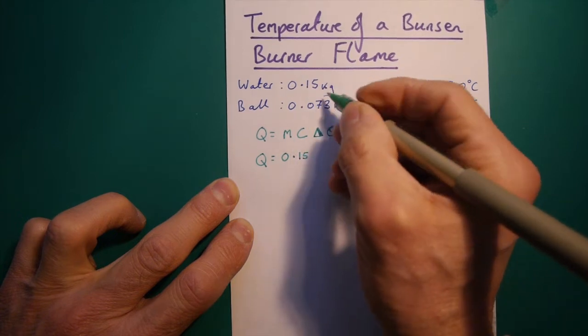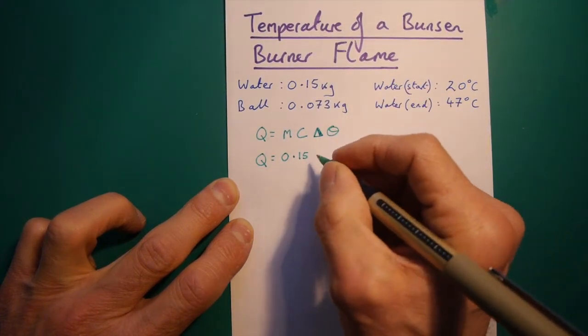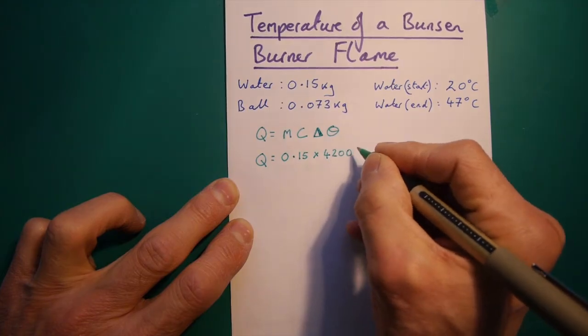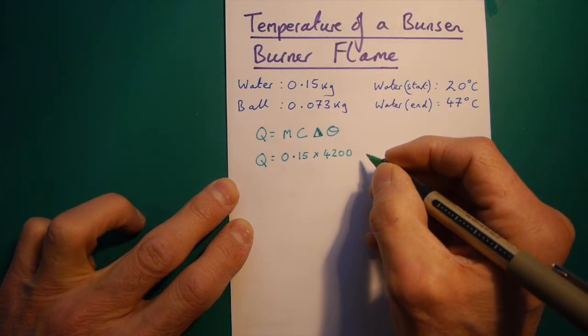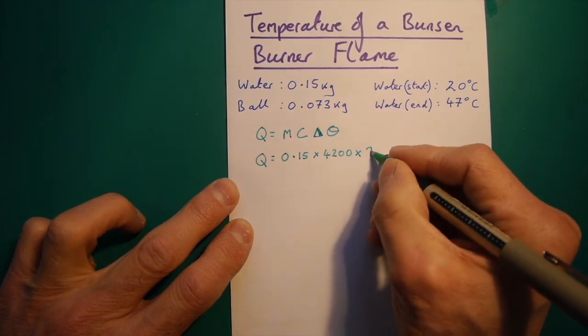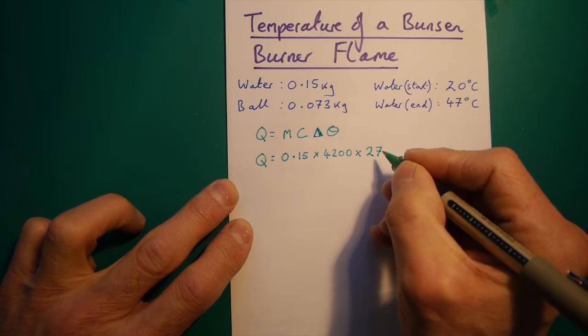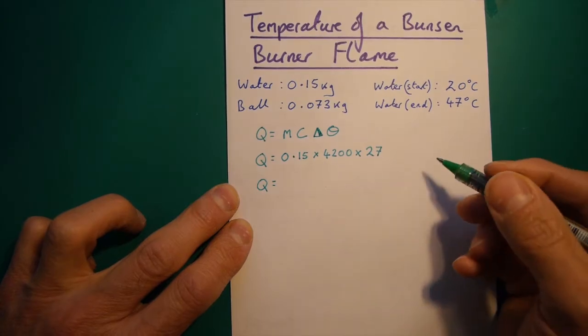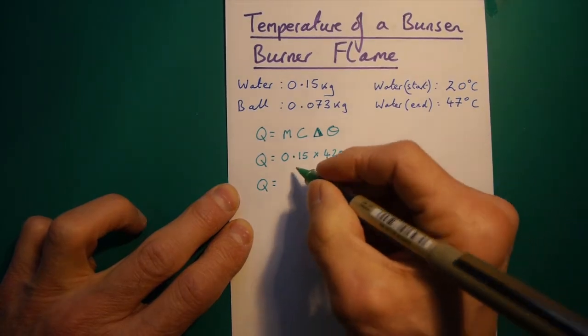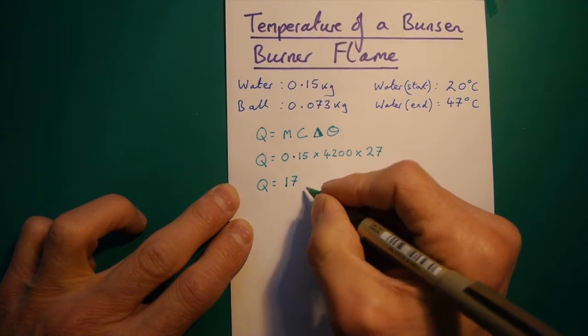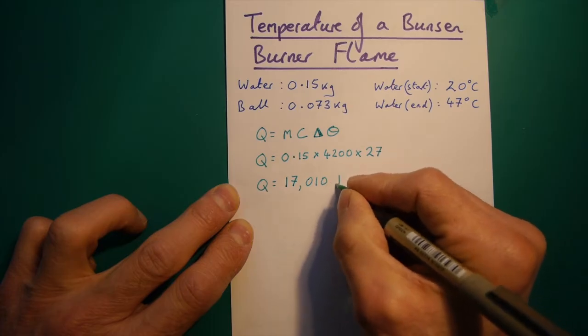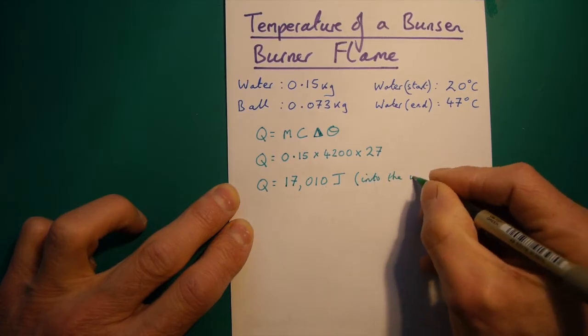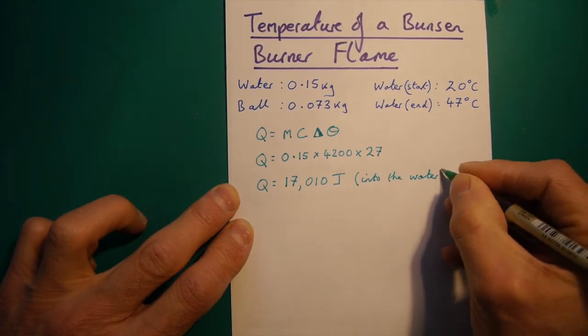But we raised it by 27 degrees C. So, the amount of energy taken from the little ball to cool it down from the temperature of the Bunsen flame to 47 degrees C was 17,010 joules of energy. And I'll remind you here that that was into the water.